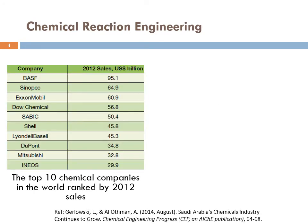Let's look at this table, which lists lots of CPIs — Chemical Process Industries. This is the top 10 chemical companies in the world, ranked by 2012 sales. You can see BASF, a well-known company based in Germany with branches around the world. They had the highest sales in 2012: ninety-five point one billion dollars — that's a lot.